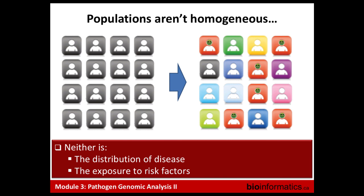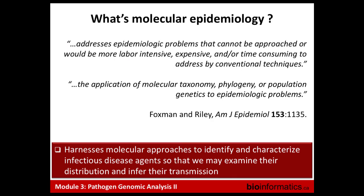In populations, no population is completely homogeneous even when it may seem that way initially. There are always going to be variations in distribution of disease and exposure to risk factors. One way we can investigate this is through molecular epidemiology — taking molecular approaches to identify pathogens and look at their distribution in the environment and transmission dynamics.